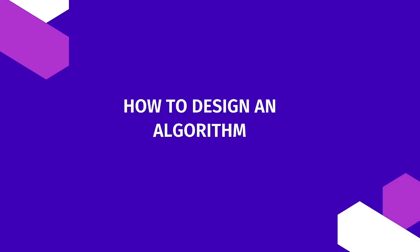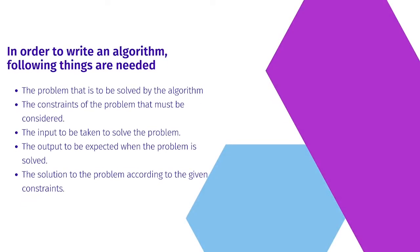Now that we've understood the characteristics, let's talk about how we design an algorithm. In order to write an algorithm, the following things are prerequisites: the problem that is to be solved, the constraints of the problem that must be considered, the input to be taken to solve the problem, the output to be expected when the problem is solved, and the solution to the problem according to the given constraints.